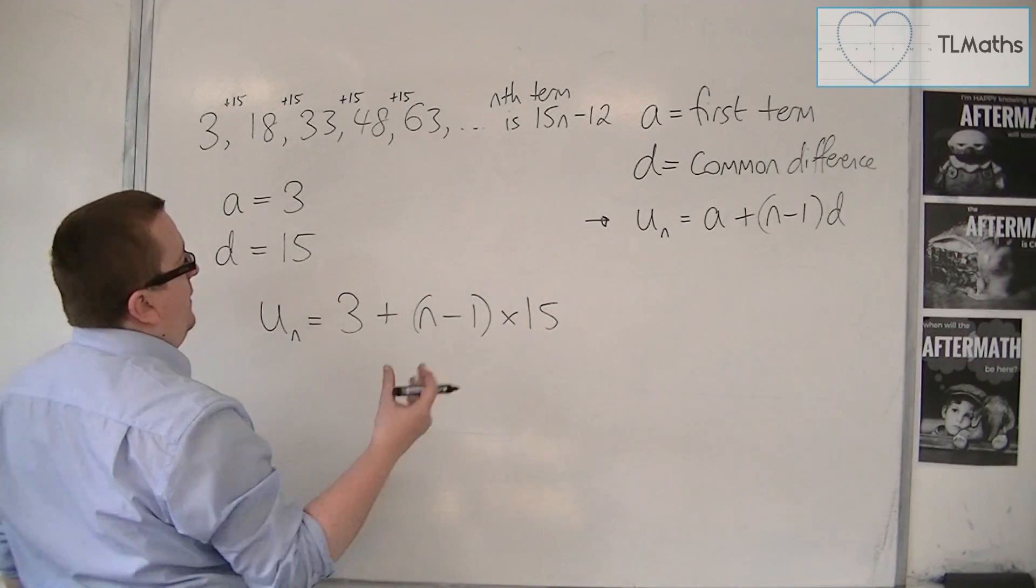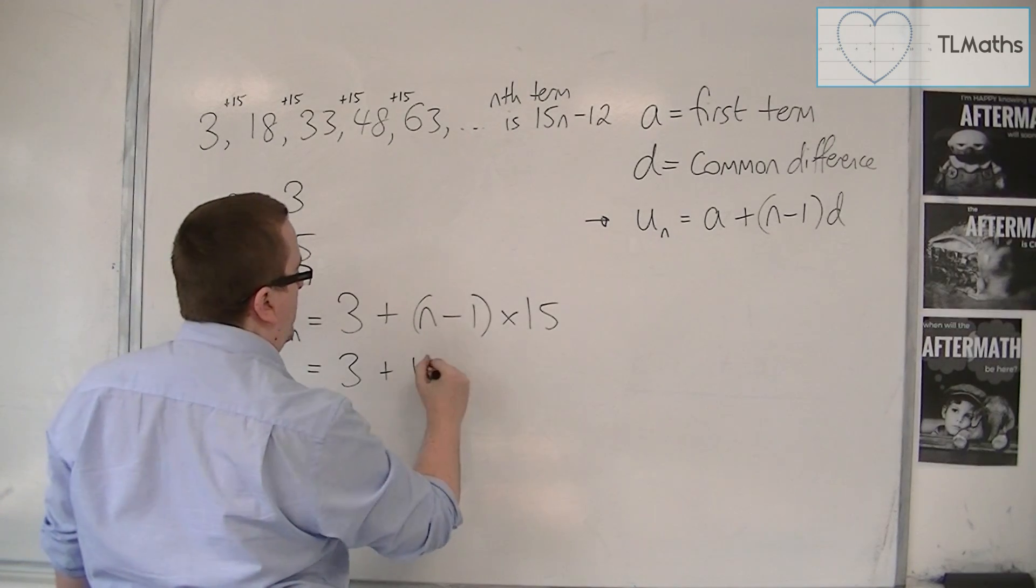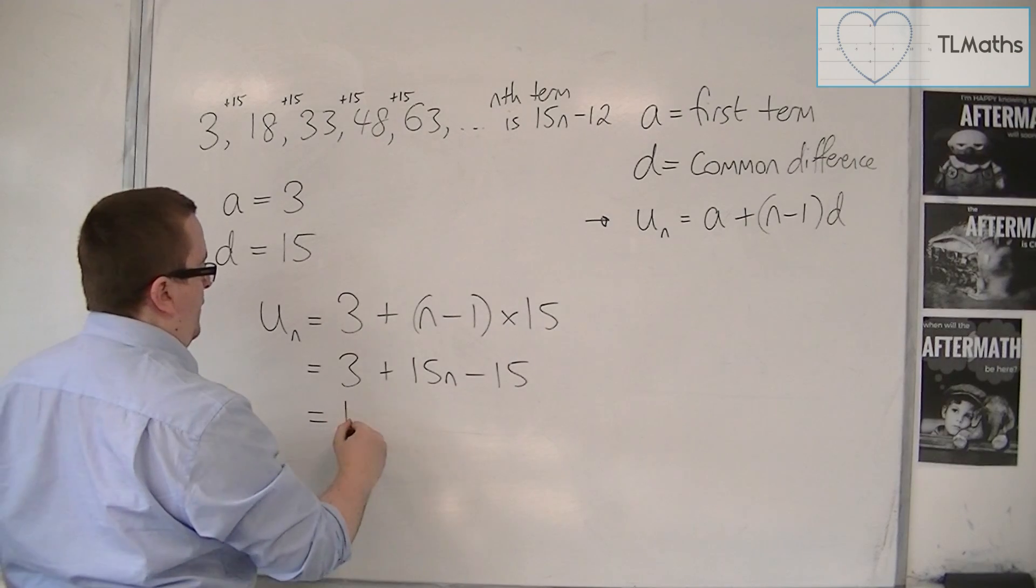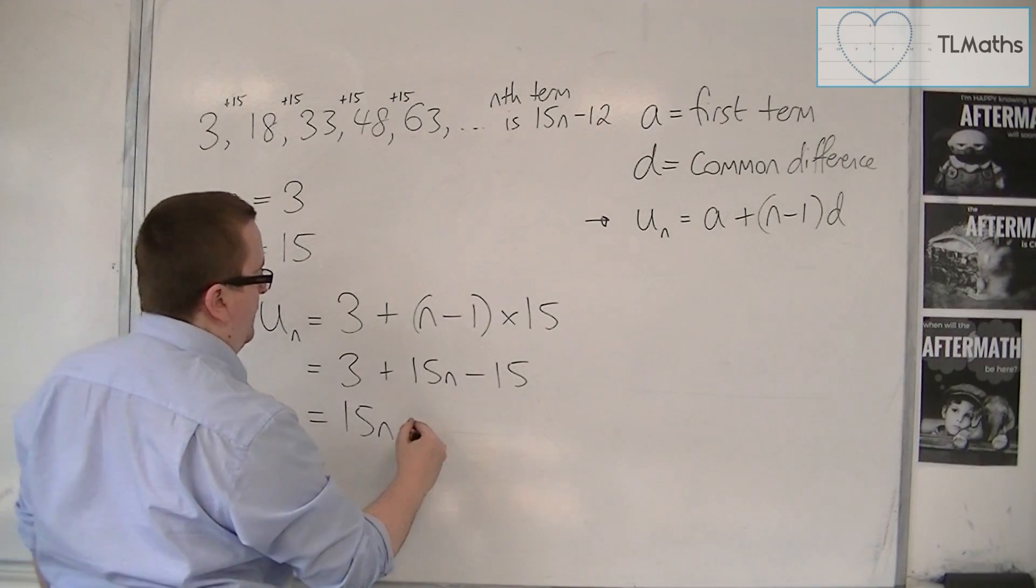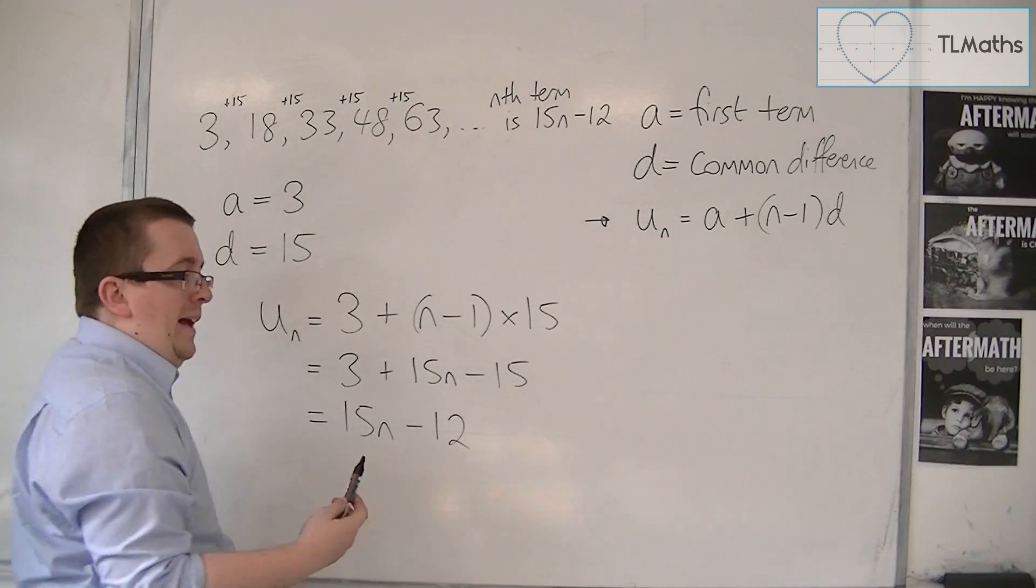So this is exactly the same. You can multiply out this bracket, so 15n minus 15, and then we've got the 15n, 3 take away 15 gives me the minus 12. So they are exactly the same.